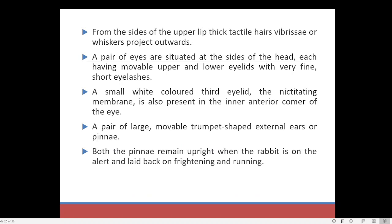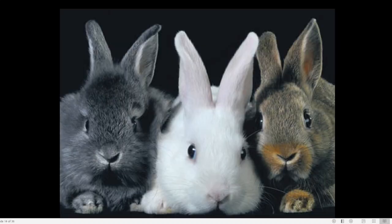A pair of eyes are situated at the sides of the head, each having a movable upper and lower eyelid with very fine and short eyelashes. The larger eyes may be able to collect more light. Since this is a nocturnal animal, with larger eyes it can collect more light even in a night situation — that may be the reason why rabbits have comparatively larger eyes, to collect maximum light.